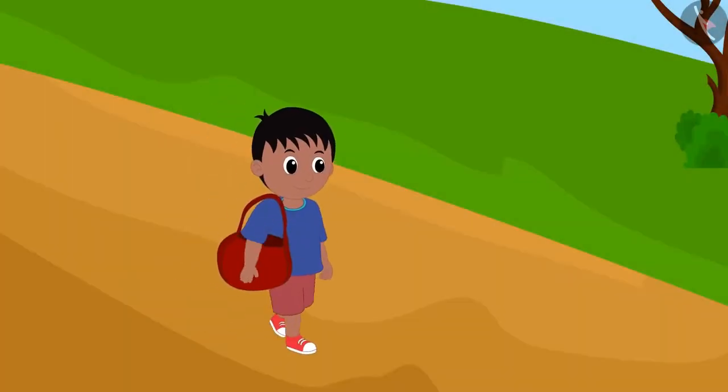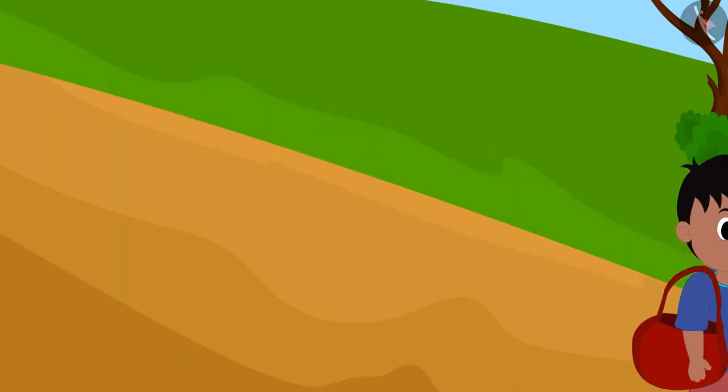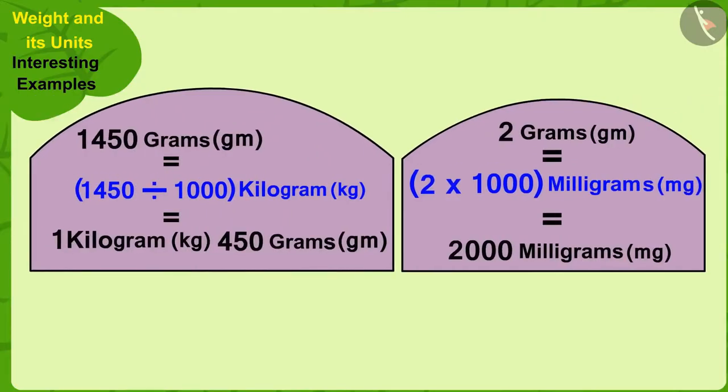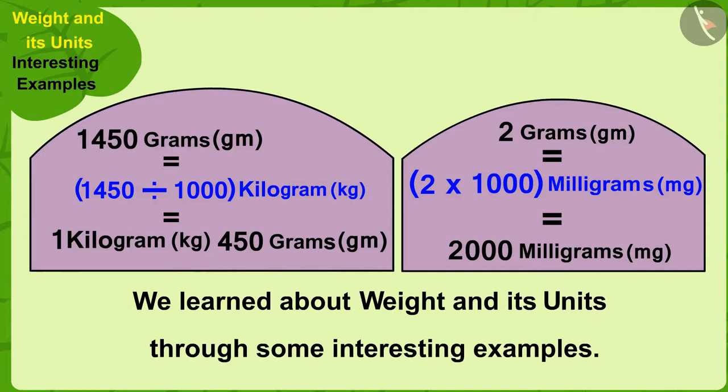Raju bought paneer and saffron from Appu and returned home. Children, in this video, we learned about weight and its units through some interesting examples. In the next video, we will look at some of the misconceptions related to this.